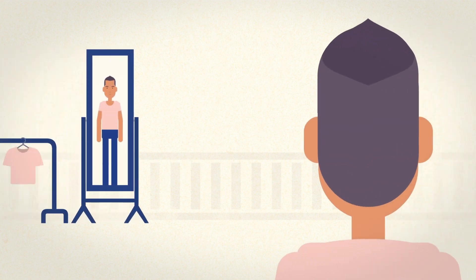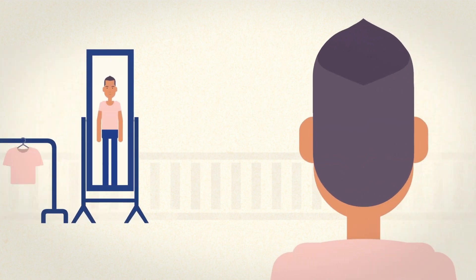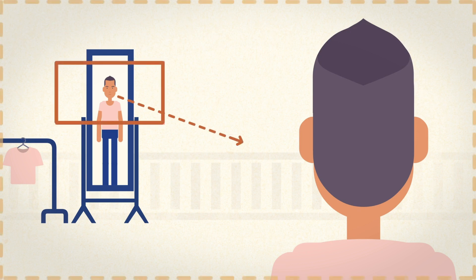Create a composition with a character in the mirror on the left and its back view on the right. Set the first camera smaller, like this, and the movement like this. Done!